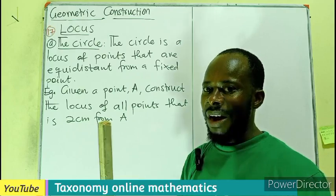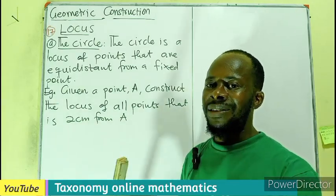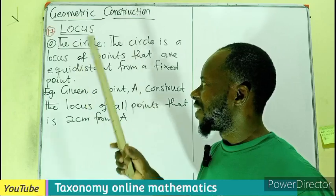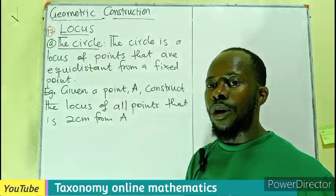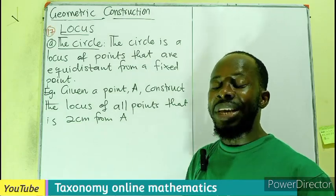We described in a previous episode that locus has four types. The first type is the circle. So what is a locus of a circle or a circle being a locus?